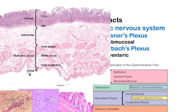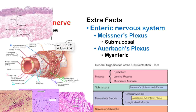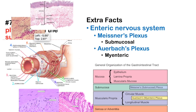The last layer is either a serosa or an adventitia. If the organ is intraperitoneal, it's a serosa; if it's extraperitoneal, we call it an adventitia.